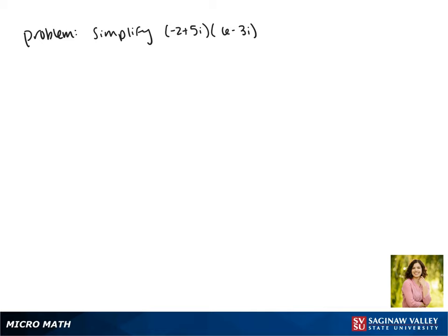Today we'll be simplifying the expression negative 2 plus 5i times 6 minus 3i. We're going to treat these complex numbers as binomials to multiply them together, so we'll FOIL.